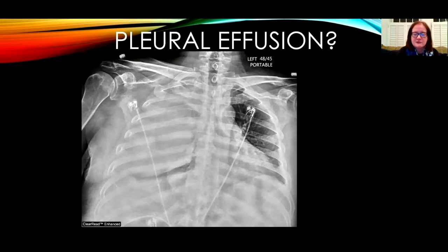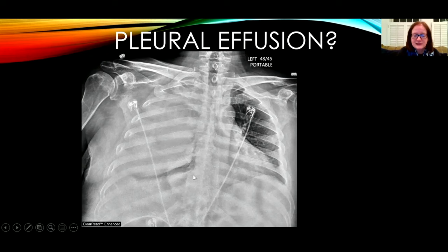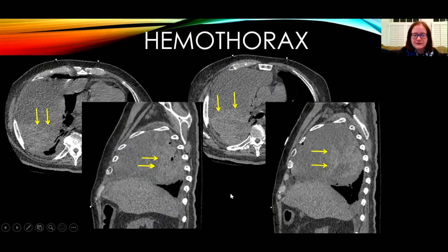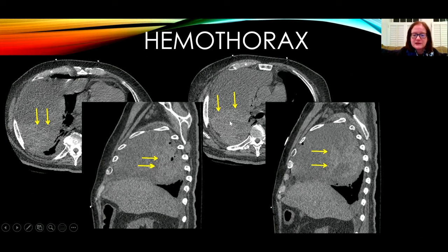This is a patient on anticoagulation treatment who became acutely short of breath, and chest radiograph shows a large right pleural effusion. One thing to notice is that this is quite dense, with increased attenuation. A non-contrast CT shows the large right pleural effusion, and the axial and sagittal images show dependent layering of high-attenuation hematocrit in this patient with hemothorax. CT with contrast can be used to look for extravasation.